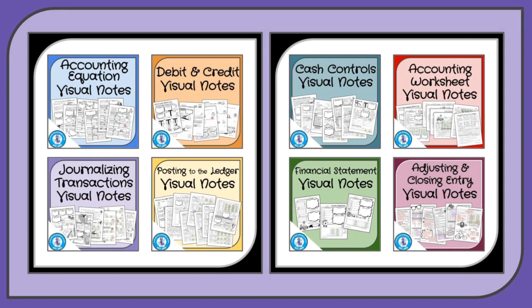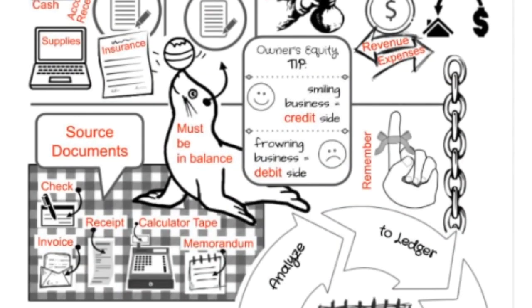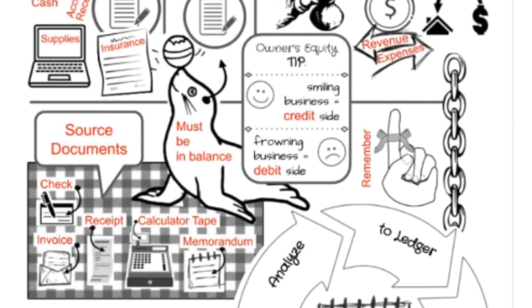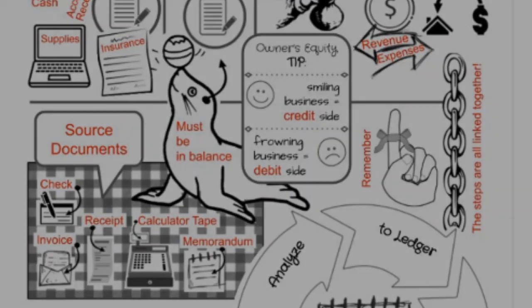Throughout the visual notes, the little ribbon tied around the finger represents something that was learned previously — just a reminder of something previously learned. The little linked chain represents that all of the steps of the accounting cycle are linked together and interconnected. Source documents start that paper trail, and it goes all the way through the accounting cycle.